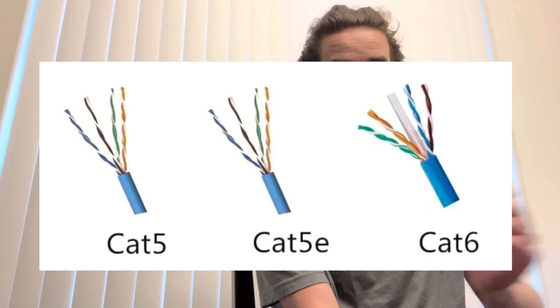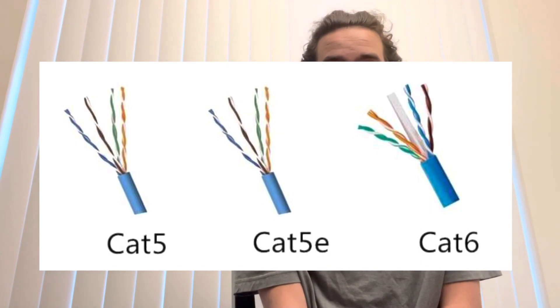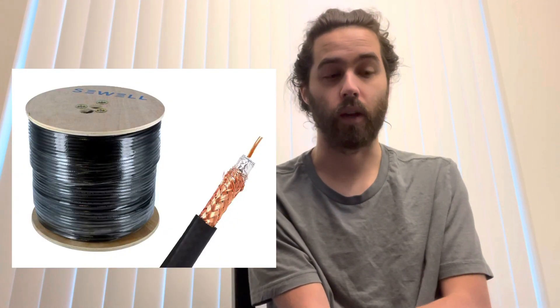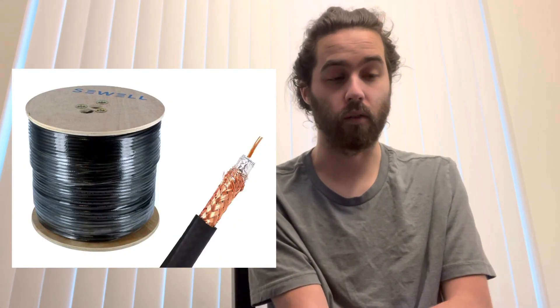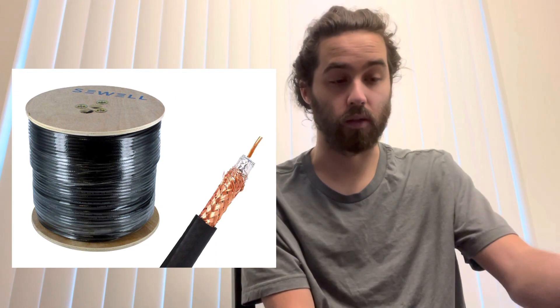Moving on, we've got Cat 5 or Cat 6, which is used for two different things these days: phone lines and also high-speed internet. Then there's the RG6, which is your coax cable, used for wiring in your TV in houses, or also maybe your internet as well. These are a few low-voltage terms.